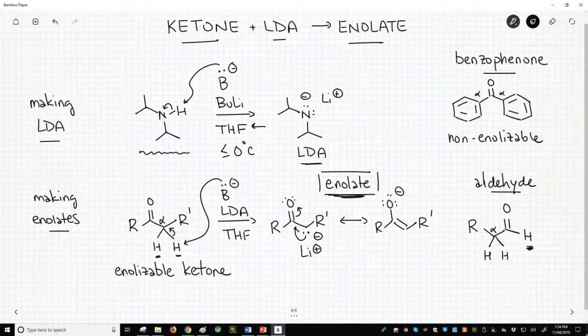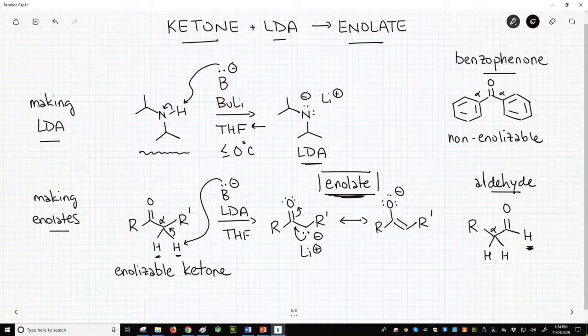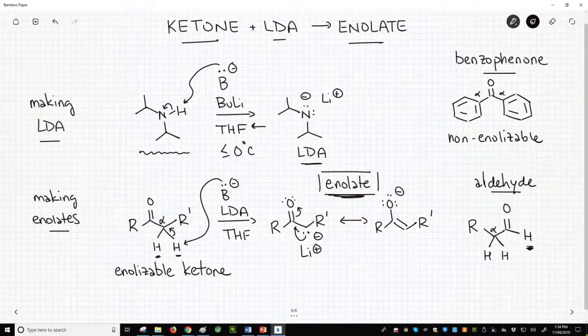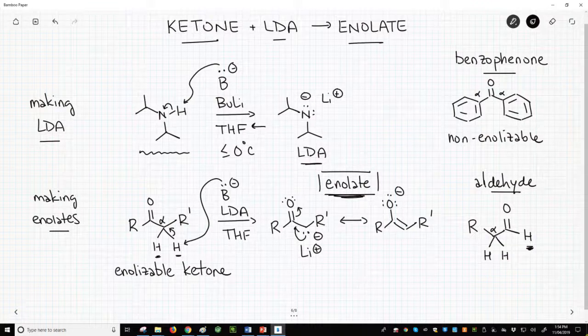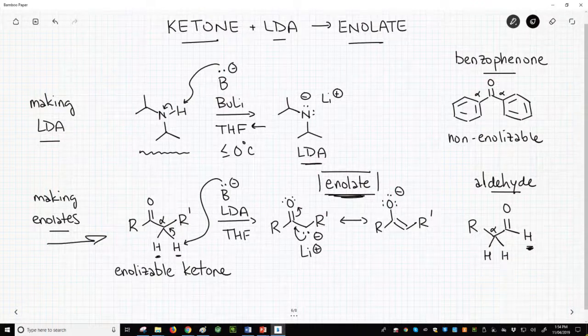When dealing with enolates in reactions, we will only make ketone enolates. That's how we use LDA to make enolates. We don't need to worry about making LDA. We just put LDA over the arrow as a reagent for making the enolate from a ketone, just like we see in this bottom reaction.